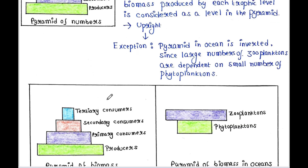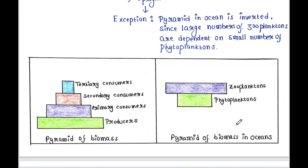However, this type of pyramid is sometimes inverted. The pyramid in the ocean is inverted since a large number of zooplanktons are dependent on a small number of phytoplanktons. Here phytoplanktons are smaller than the zooplanktons — this is the exceptional case.